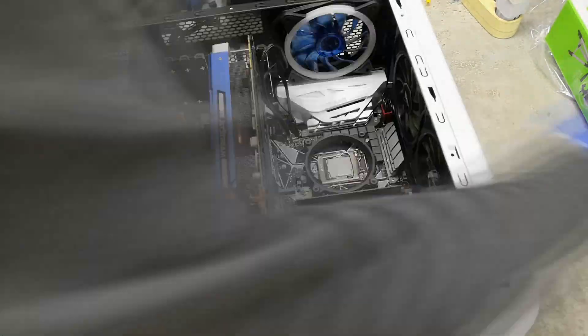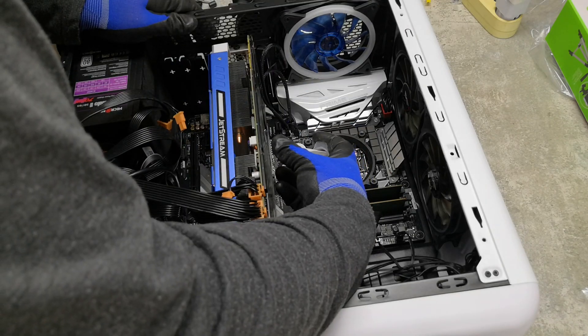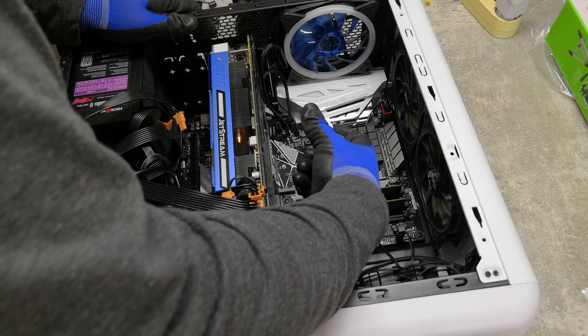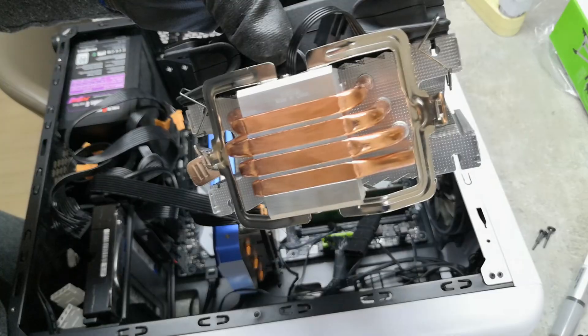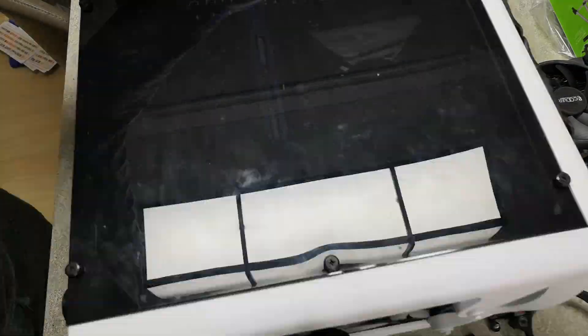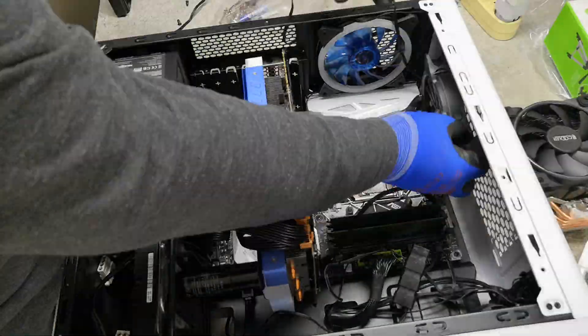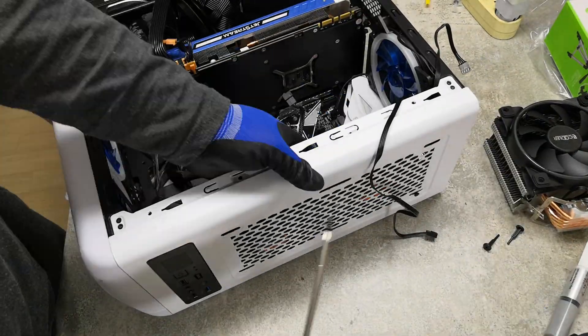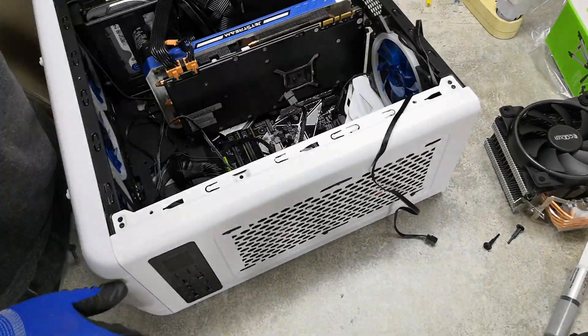To do this, I removed used thermal grease and reapplied it after removing the watercooler as I mentioned in the last video. This test is doing with a front glass panel. At the time of testing, the room temperature was 24.2 degrees.